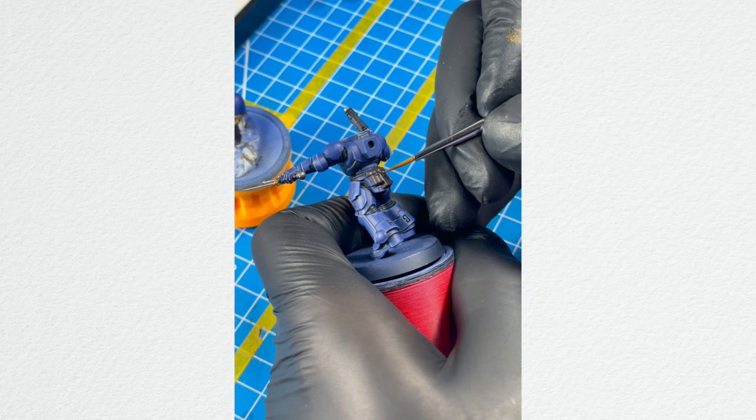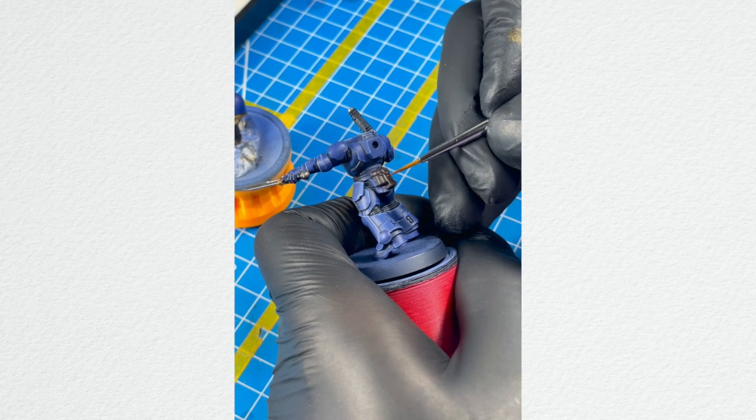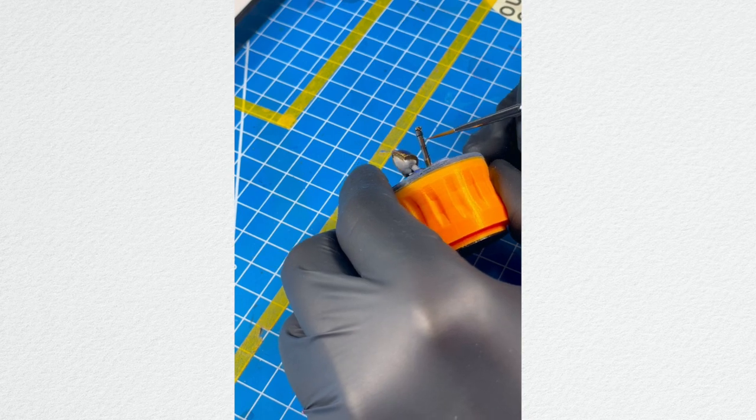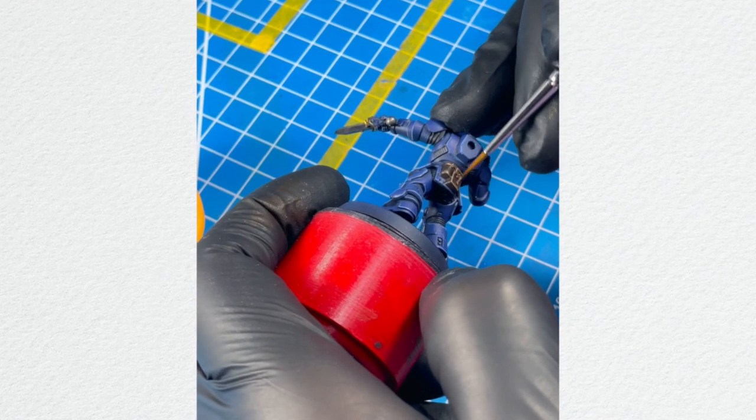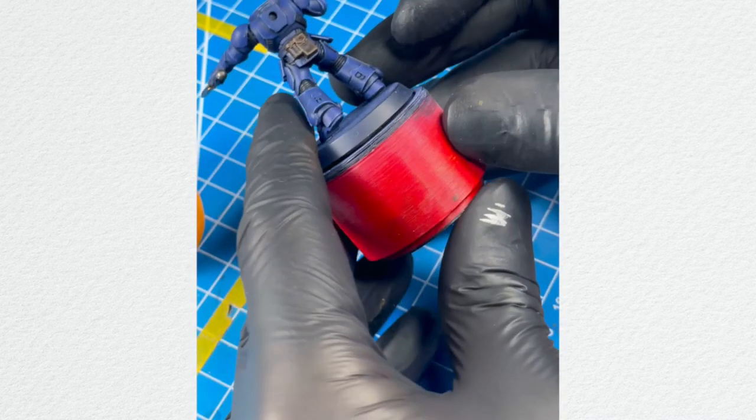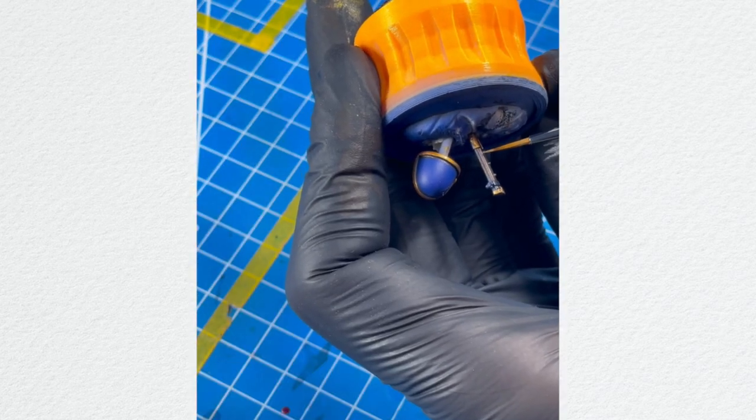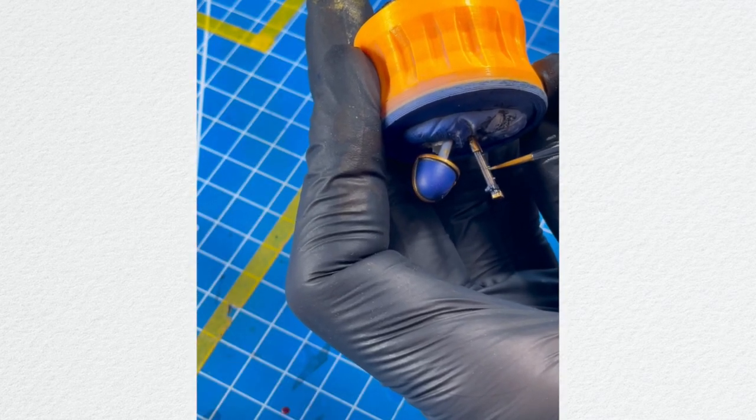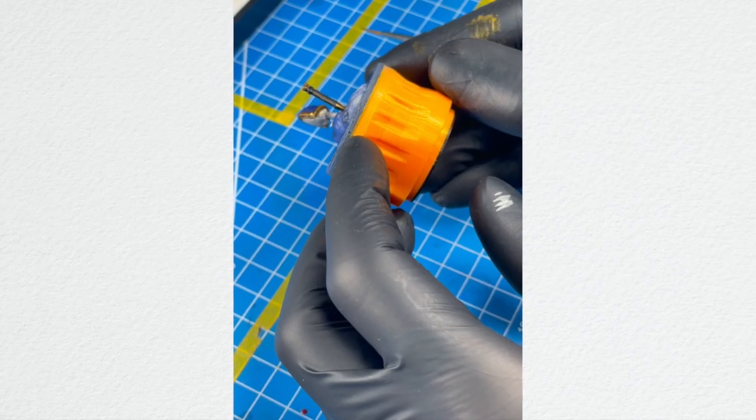We got our leather washed, so now it's time for highlighting. Go for Mournfang Brown as the first, thicker highlight, and the more extreme highlight will be the Karak Stone. So you don't need to be very neat using the Mournfang Brown, but when it comes to Karak Stone, go only for the sharpest edge.